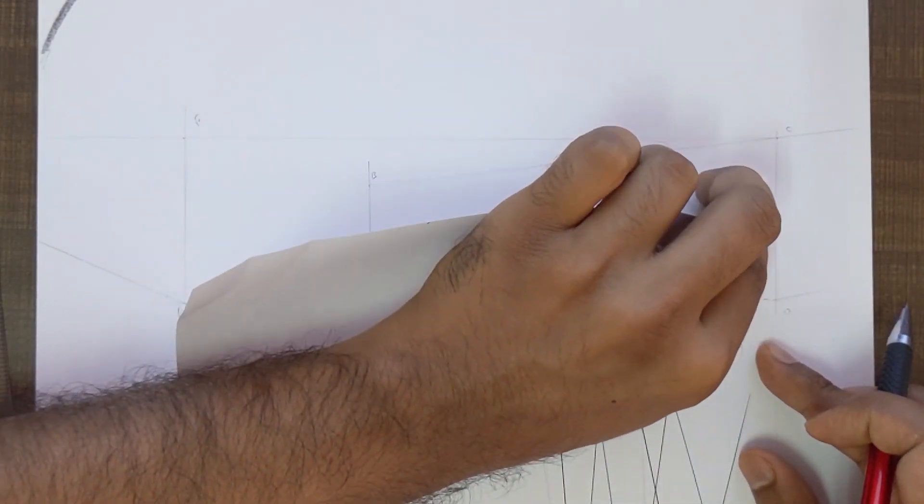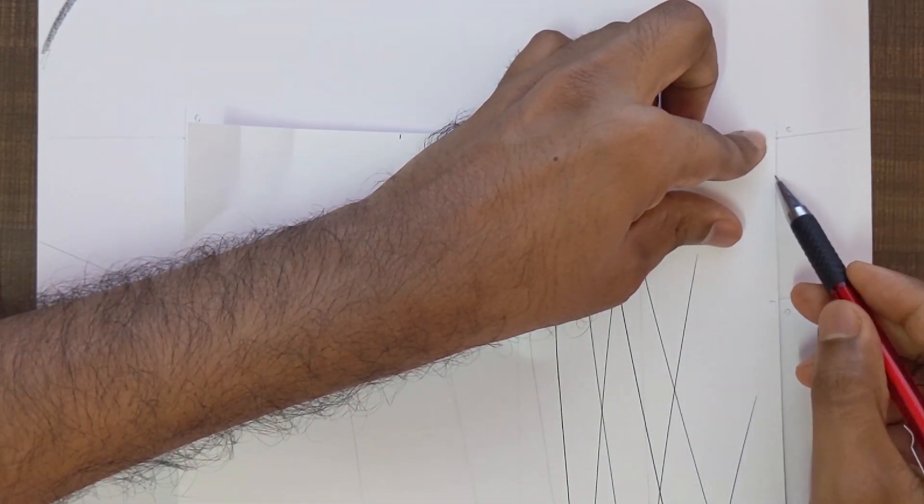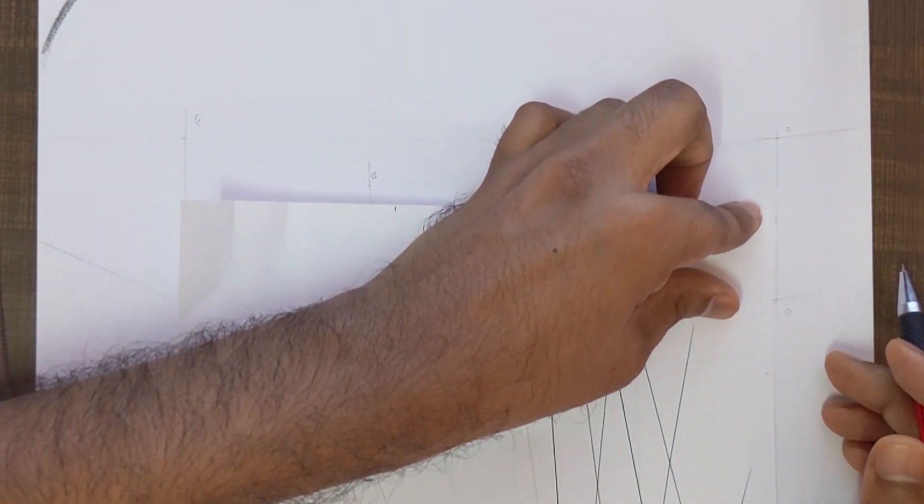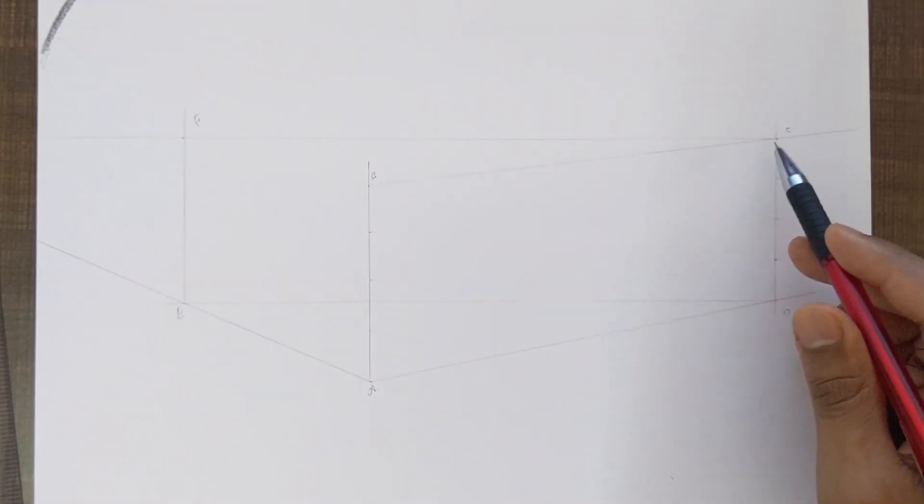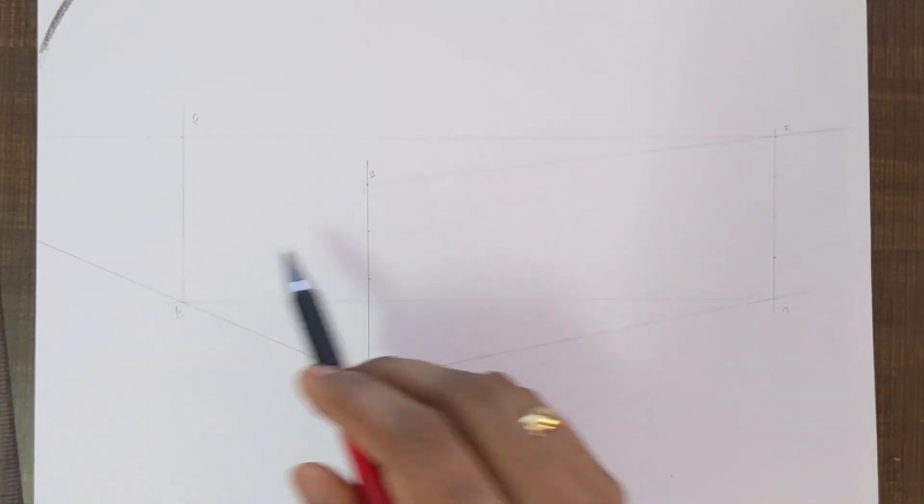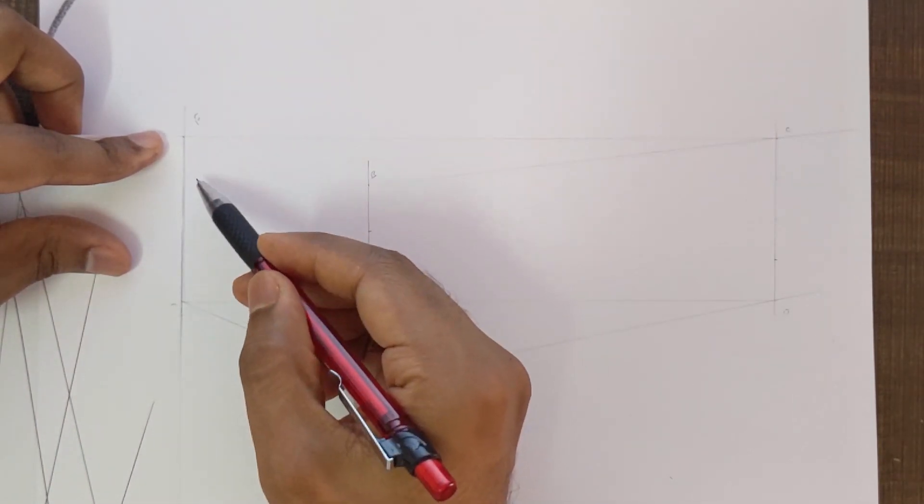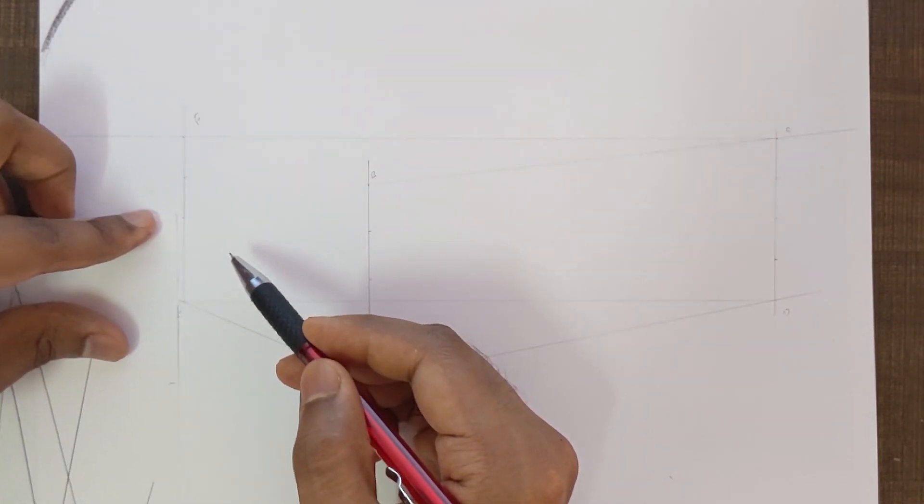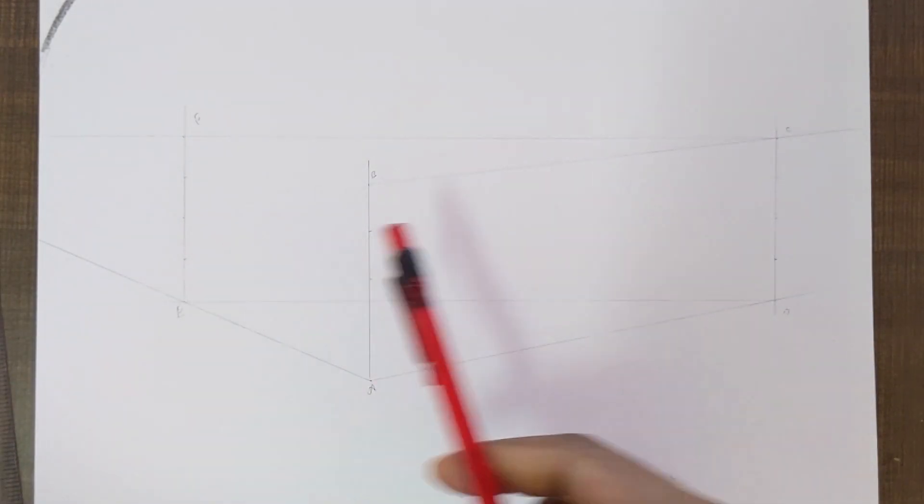Crease it here and crease it here. That's it. Since these two angles are 90 degrees, this length and this length are going to be the same, so I can use the same measurement over here.